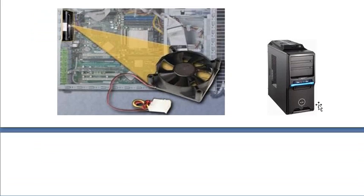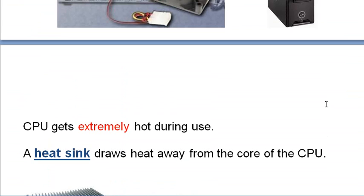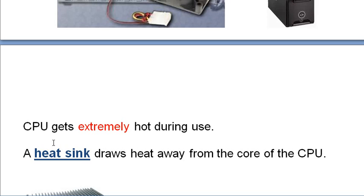The CPU gets extremely hot during use. If the CPU overheats it's going to stop working and shut down. If there's no cooling system on the CPU, it will shut down basically every time you use it because it'll just overheat, so you've got to get a cooling system for your CPU.